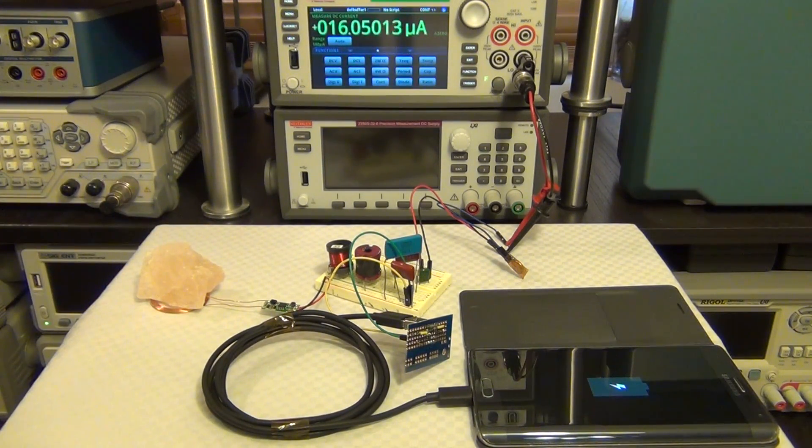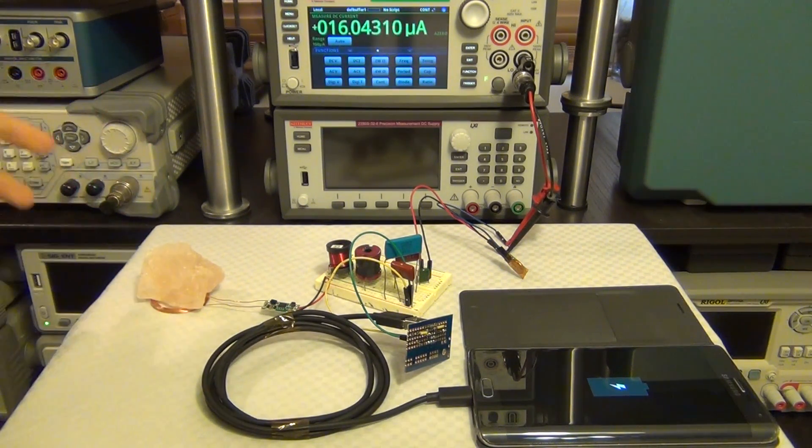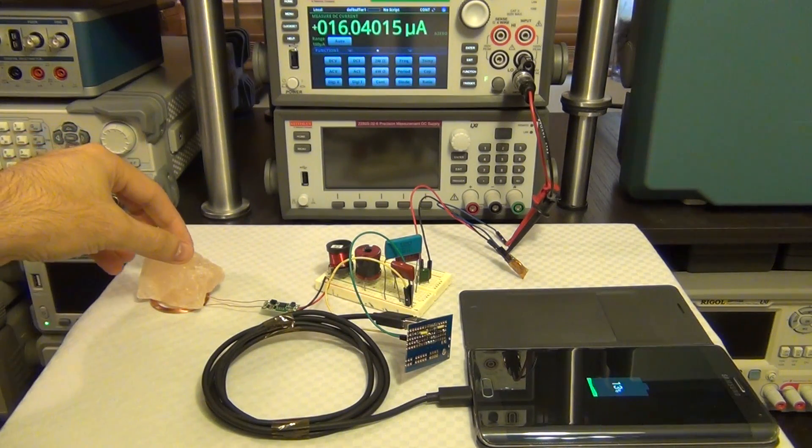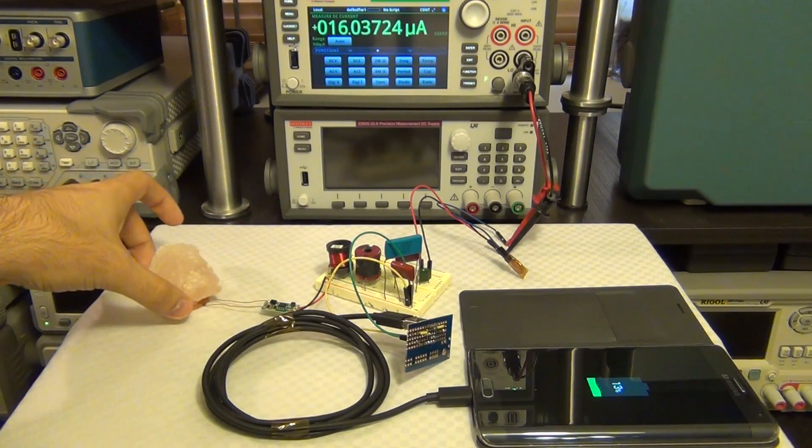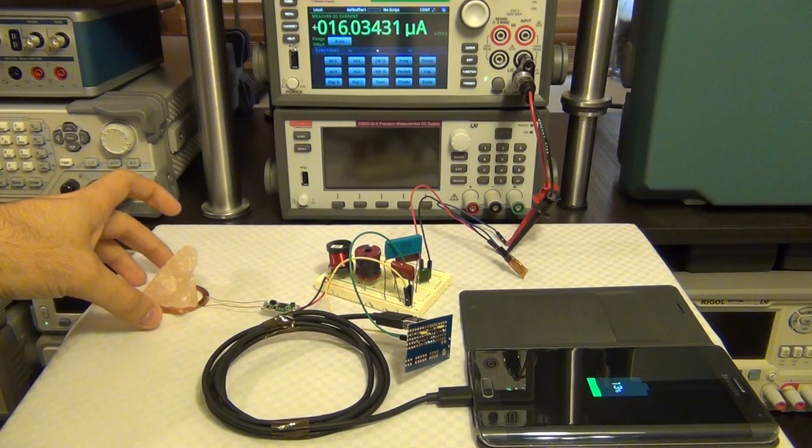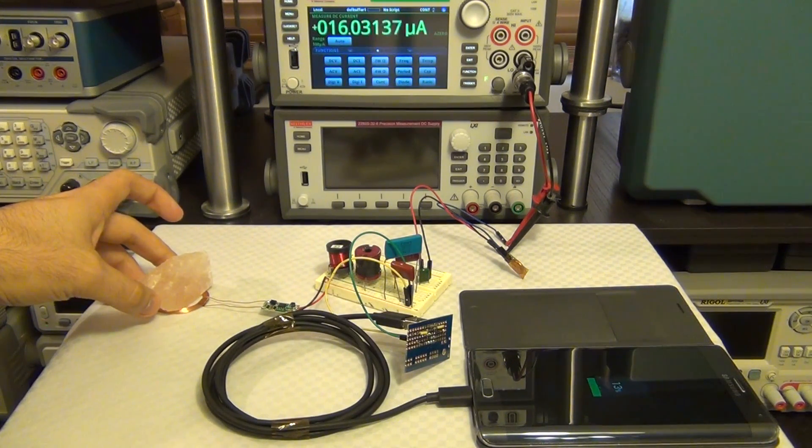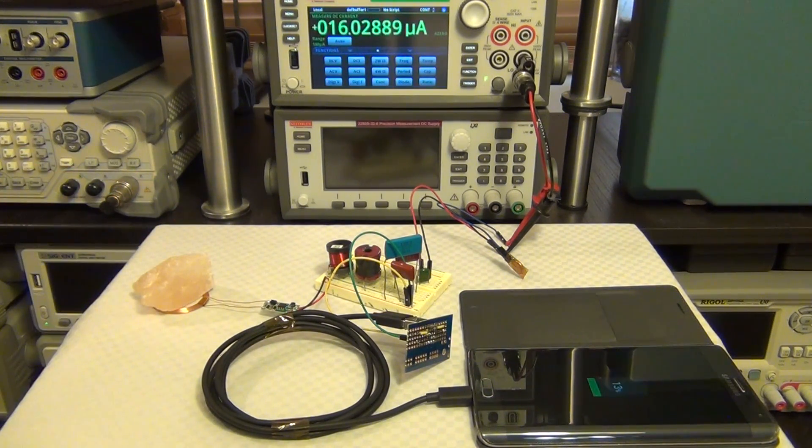Now you can with microamps of current easily charge your phone. Works beautifully. One of the advantages of this crystal as opposed to other crystals is that no matter what the axis is it will always work. This is a multi-axis dimensional type of crystal. It will never stop charging no matter how you place it. Isn't that great?